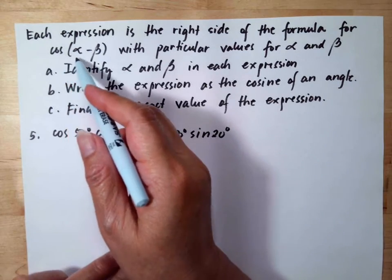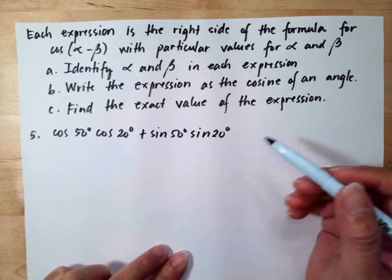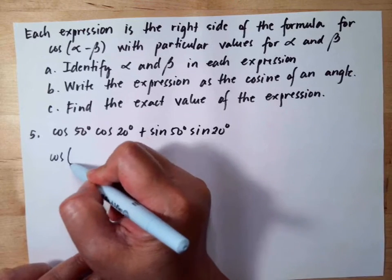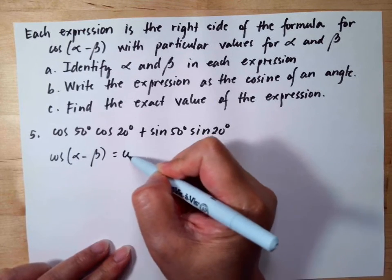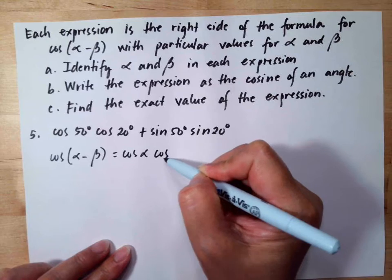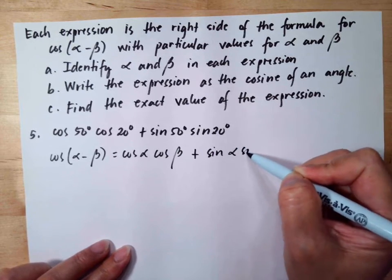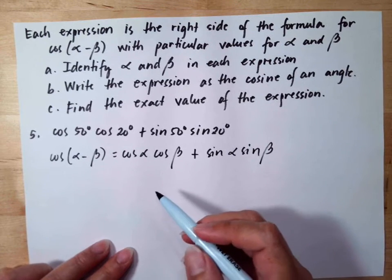Now, for the formula of cosine alpha minus beta, this is cosine alpha minus beta equals cosine alpha cosine beta plus sine alpha sine beta.